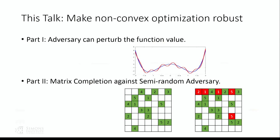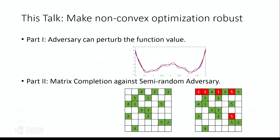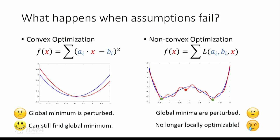In this talk I'm going to show you two examples where, under certain assumptions, we can change the algorithms and make non-convex optimization robust.